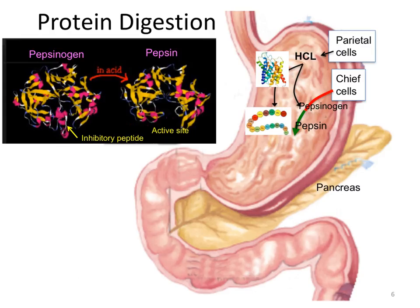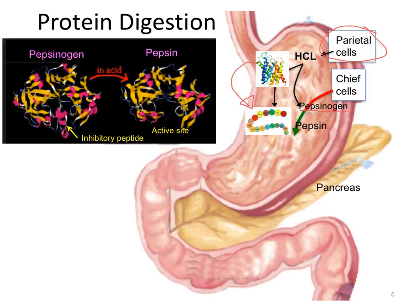Protein digestion begins in the stomach. First, the parietal cells in the stomach lining secrete hydrochloric acid, which has two important roles. First, this lowered pH — the acid environment — unfolds or denatures our proteins, so their highly folded state now becomes linear polymers as shown here. Secondly, the hydrochloric acid activates the inactive zymogen pepsinogen to become active pepsin, as shown on the side here as well.